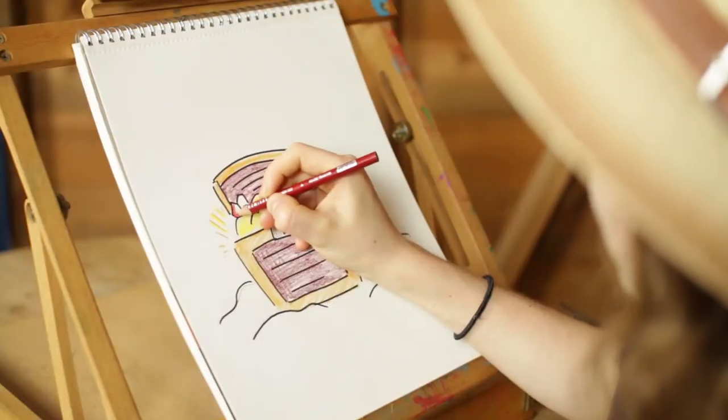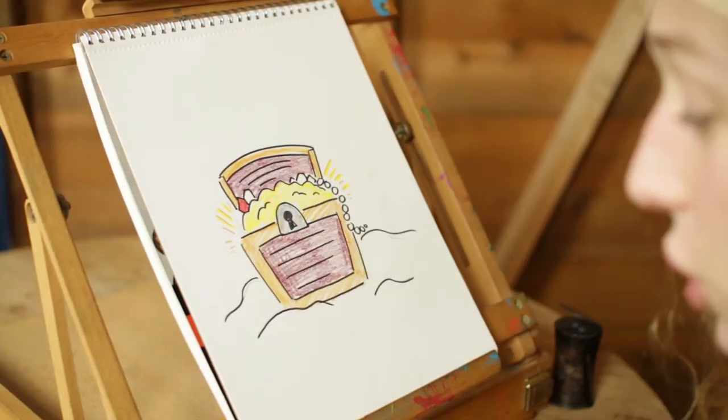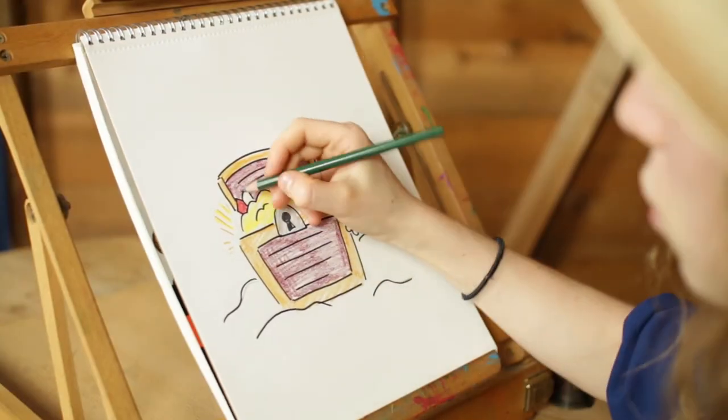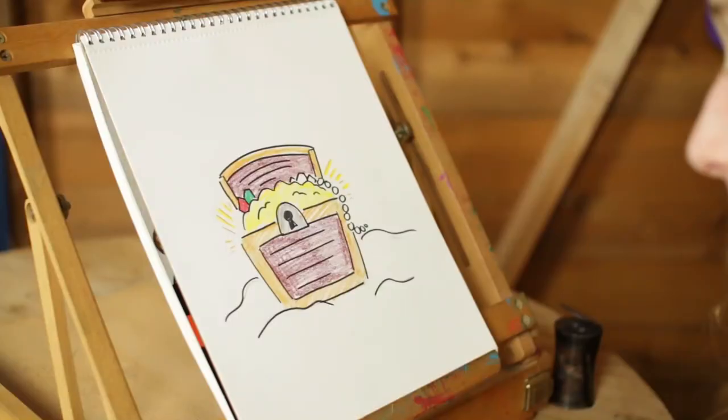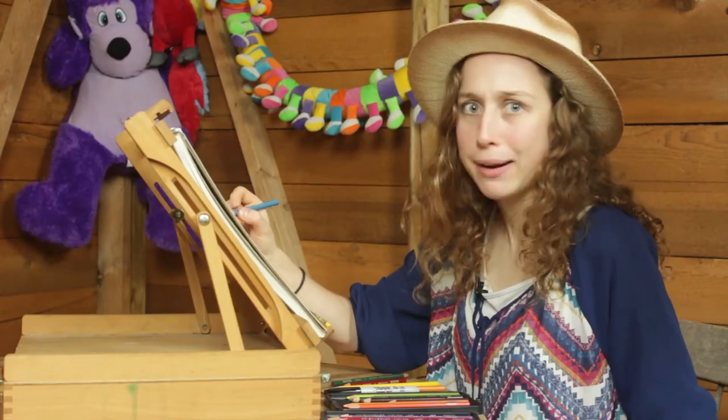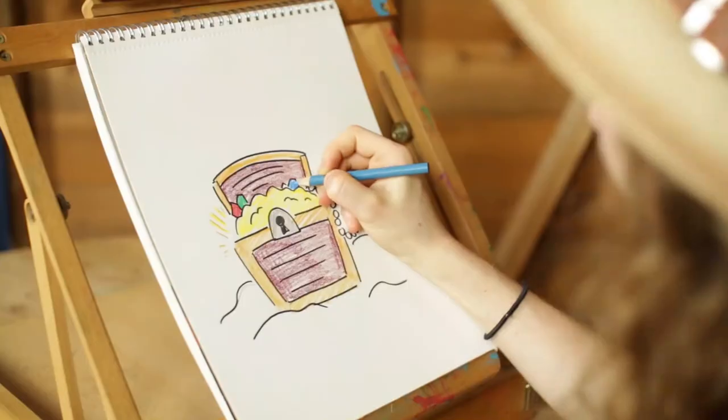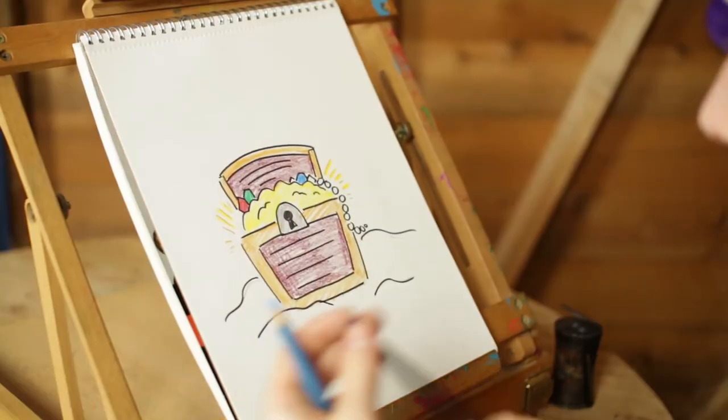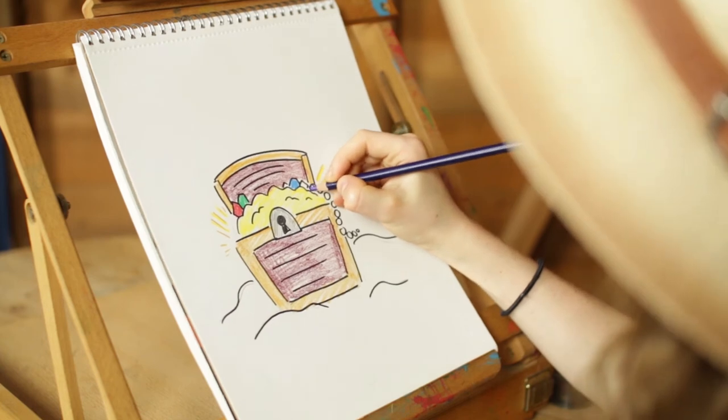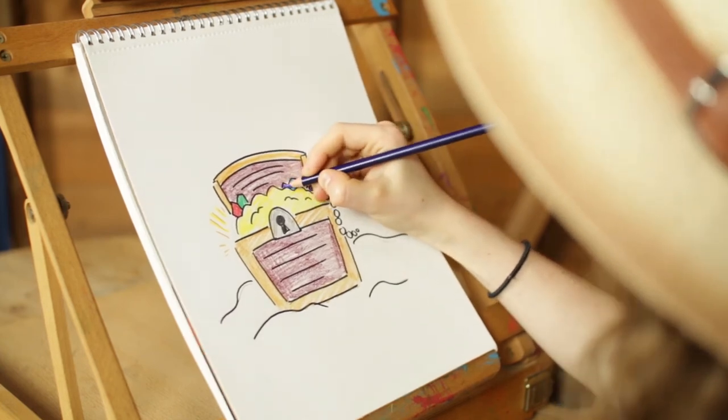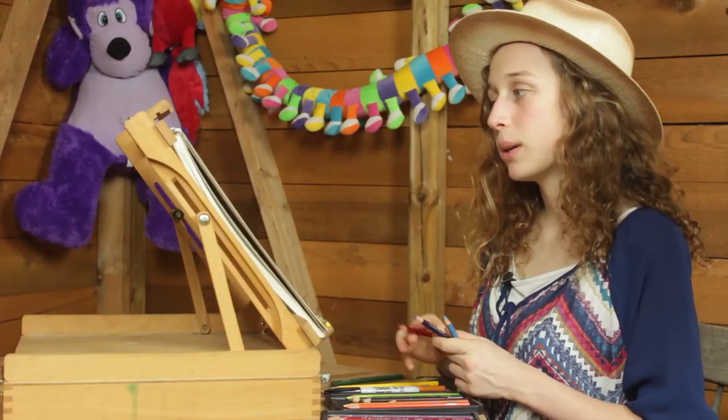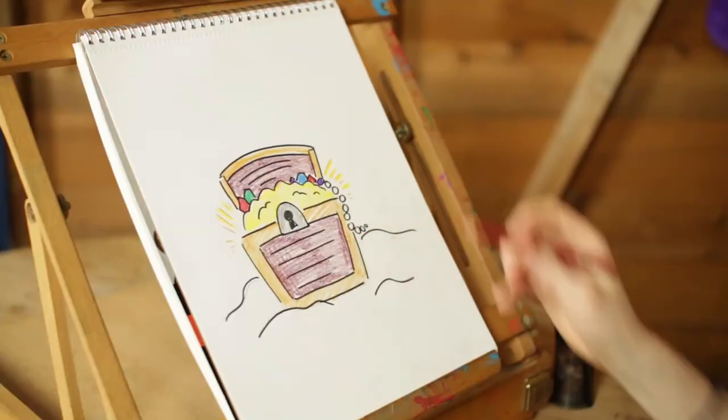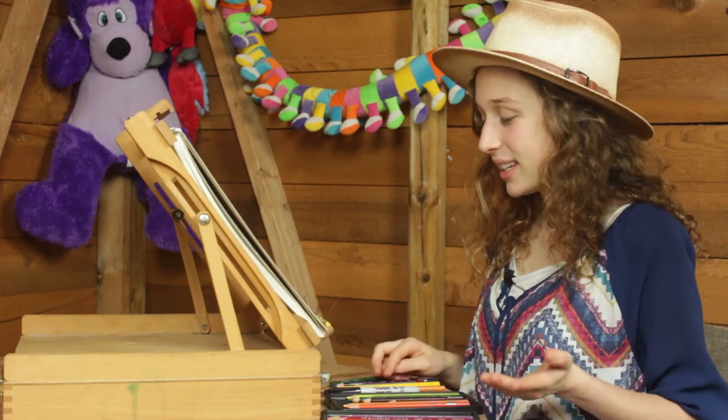Then all of the beautiful jewels, you can color those in. Some of them are red. Sometimes they call those rubies. Some of them are green. They'll call those emeralds. Some of them are blue. I don't know what they call those. You can color them whatever colors you like. I think I'm going to make one purple maybe. And I'll do another one red. And usually pearls are white so we can leave all of those white.